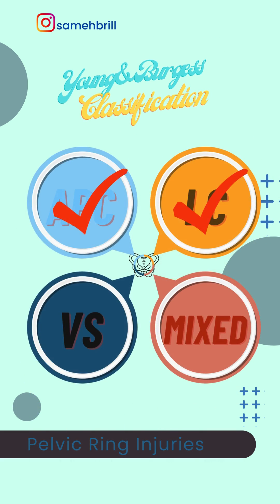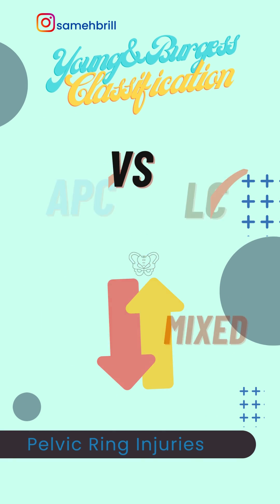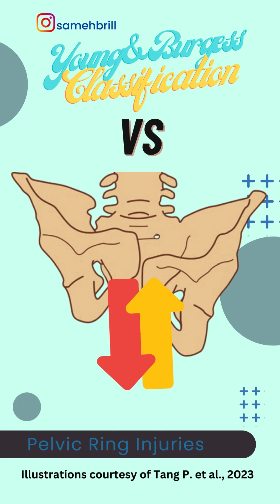Moving on to vertical shear: the shear forces acting on the pelvis disrupt both anterior and posterior structures, causing a complete loss of pelvic stability.